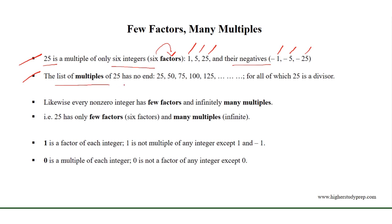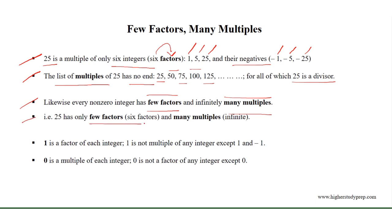On the other hand, the list of multiples of 25 has no end, starting from 25, 50, 75, 100, 125, and so on, for all of which 25 is a divisor. Likewise, every non-zero integer has few factors and many multiples — that is, 25 has only 6 factors, that is 6 divisors, and many multiples.